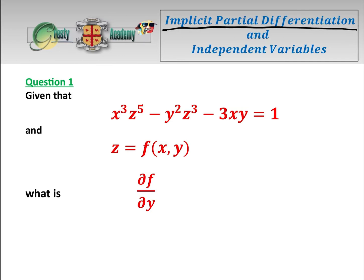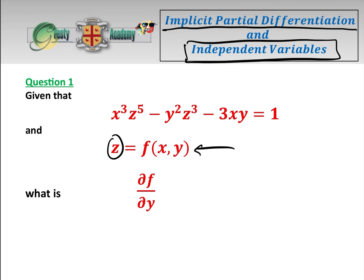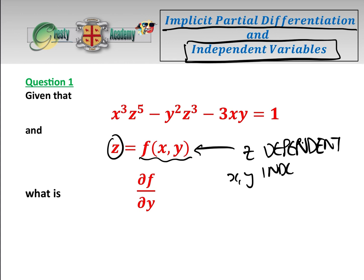Today we're going to be doing implicit partial differentiation and independent variables. We're going to do two questions, each with two methods — one using implicit differentiation and the other using the chain rule. Question one is slightly easier than question two because it tells us that z is a function of x and y, so z is the dependent variable and x and y are the independent variables.